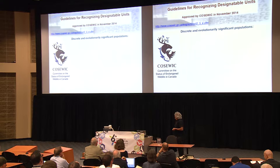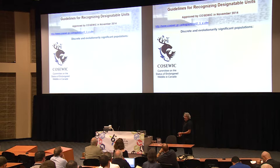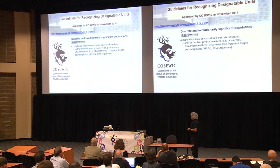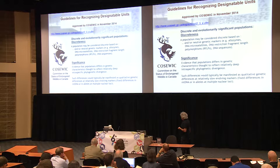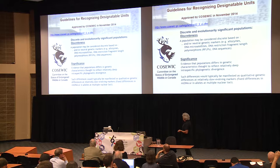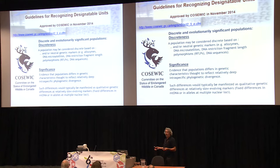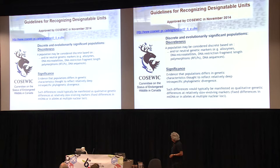This gap in integrating genomics and putting it into action is illustrated in Canada by the criteria and guidelines for recognizing designable units under the Committee for Status of Endangered Wildlife in Canada. For example, the first step is to define discreteness, and the criteria state that a population may be considered discrete based on neutral genetic markers — allozymes, microsatellites, RFLPs, DNA sequences — criteria that for me smell more like 2000 to 2015. The word genomics is just still totally absent in terms of the criteria used to define designable units in Canada.